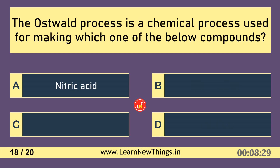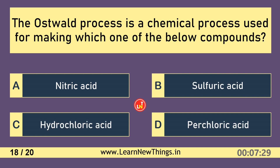The Ostwald process is a chemical process used for making which one of the below compounds? Nitric acid.